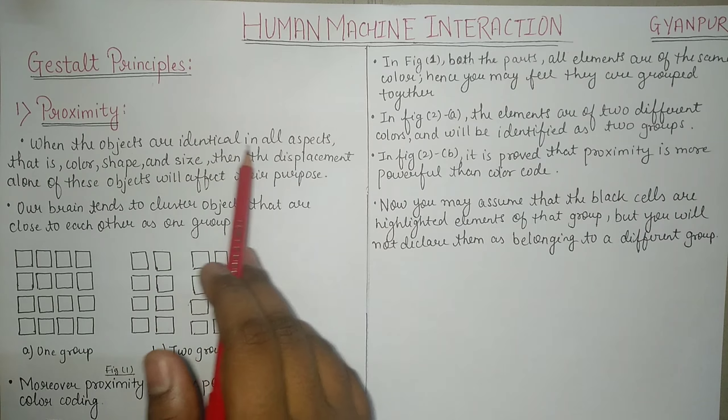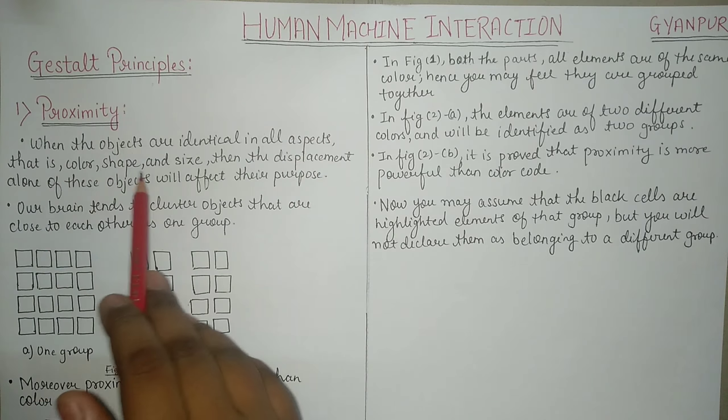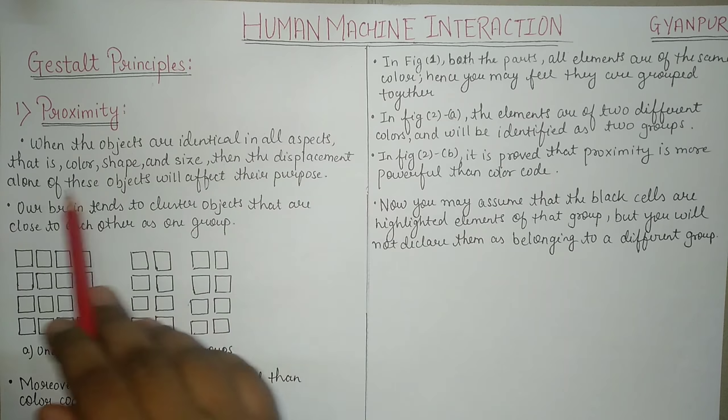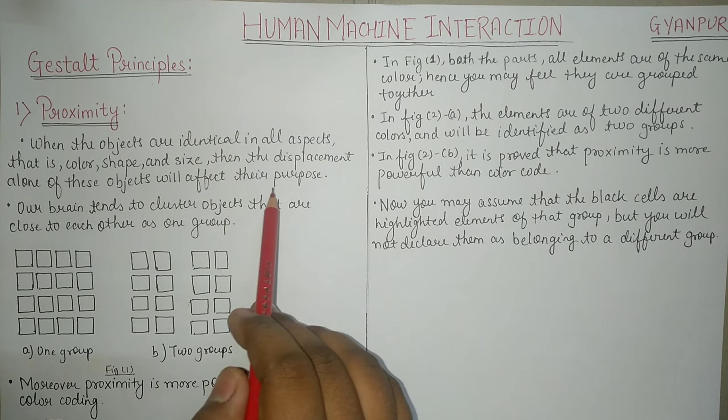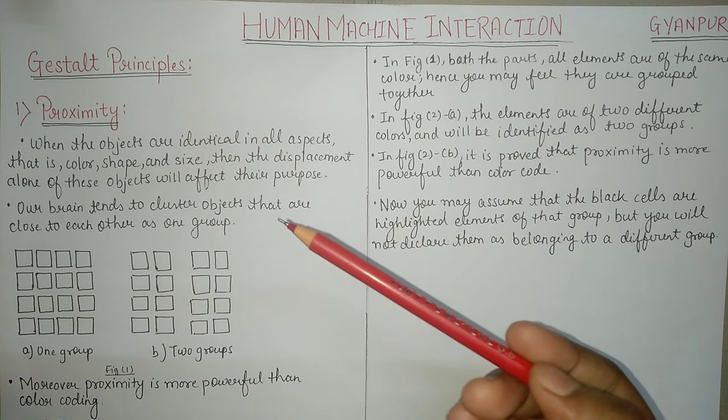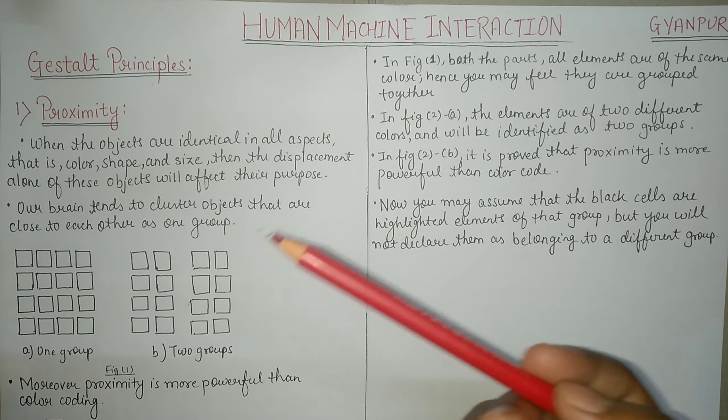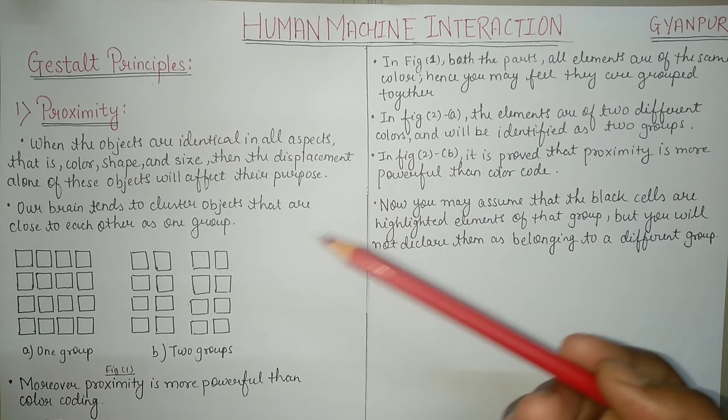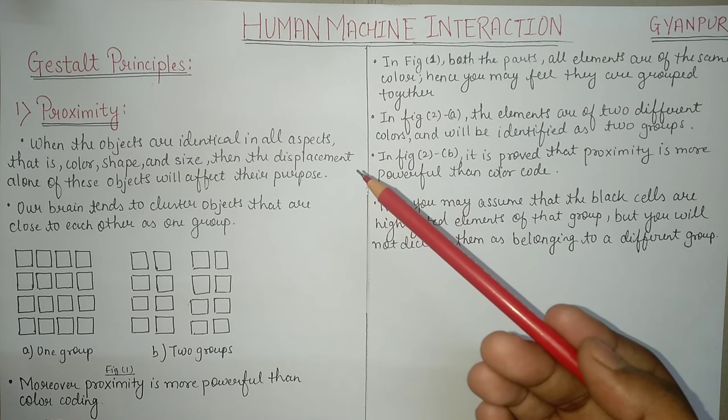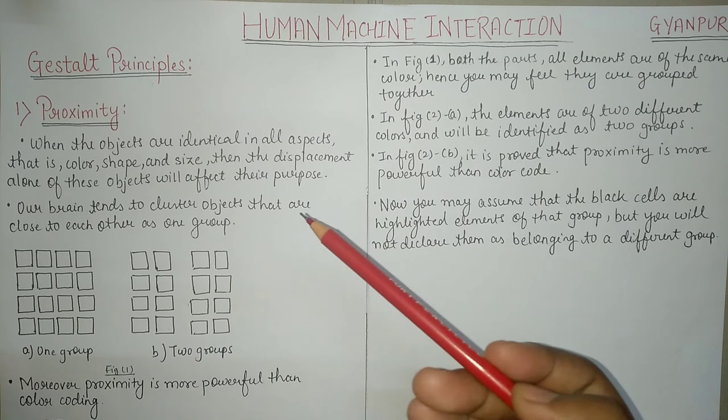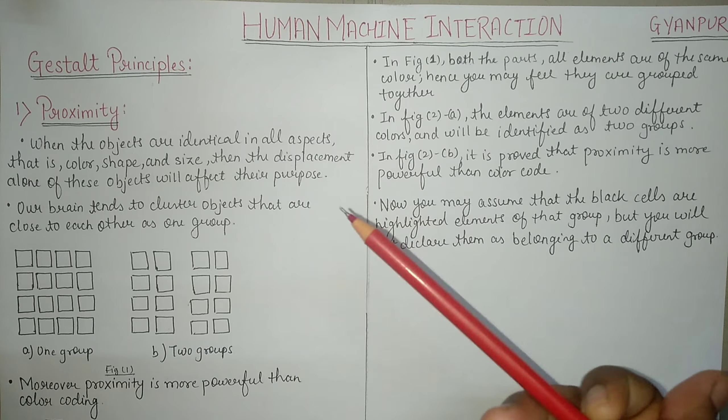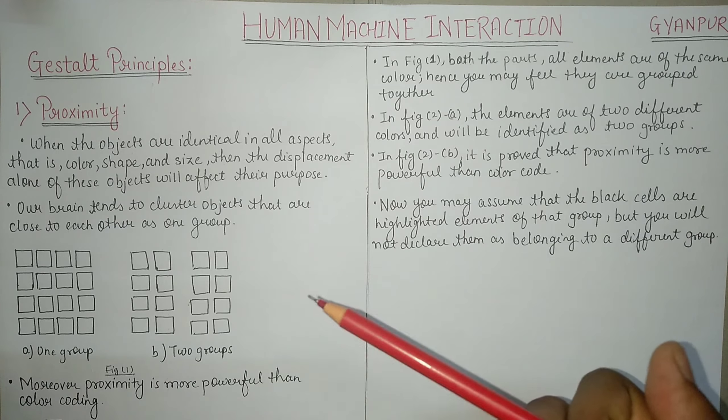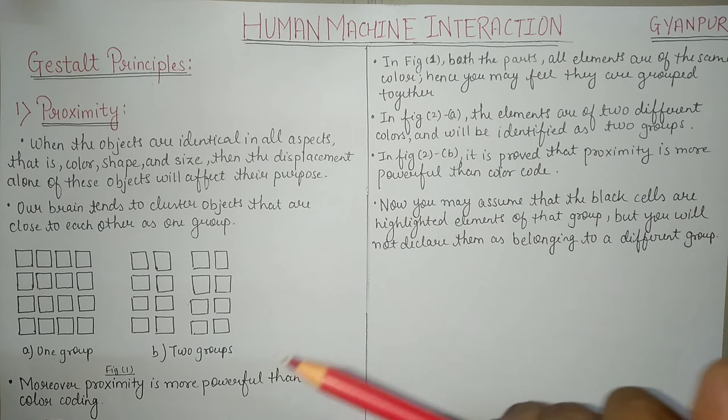When the objects are identical in all aspects, that is color, shape and size, then the displacement alone of these objects will affect their purpose. If there are objects that are identical in each other, whether it is color, shape or size, they are identical completely. So if there is displacement in each other, then their purpose will change or we will keep them in a different group. Otherwise, human eye will always tend to place them in the same group.